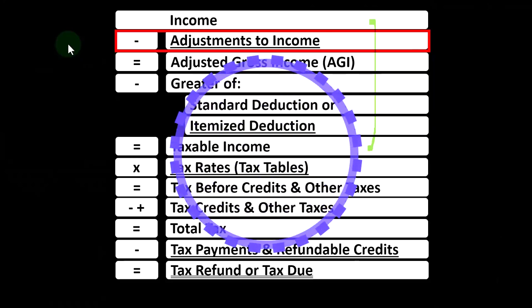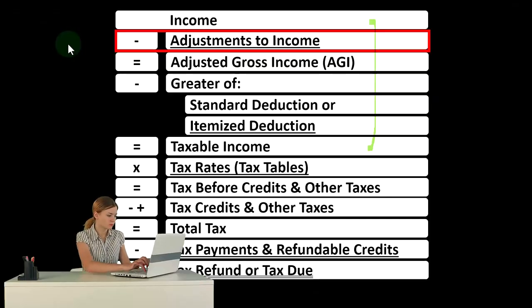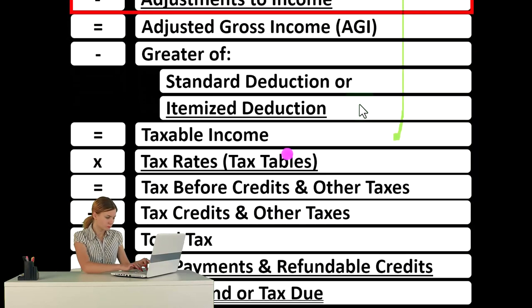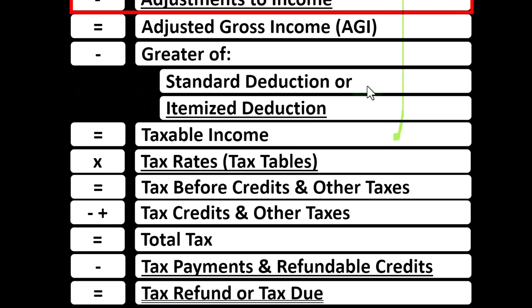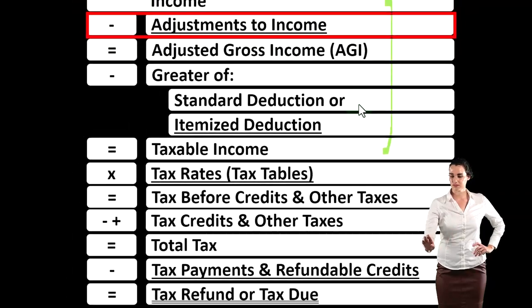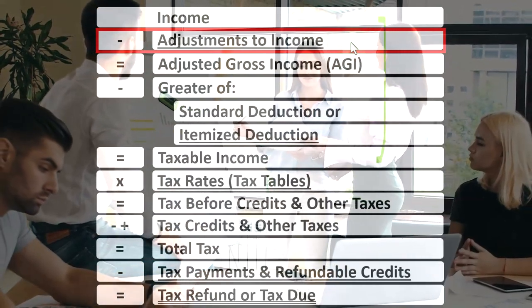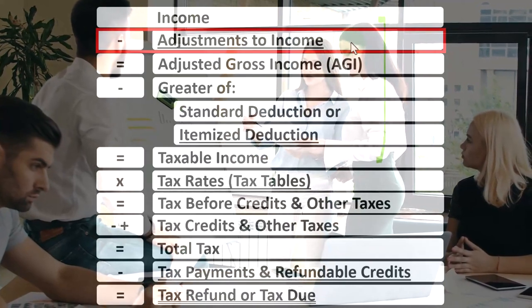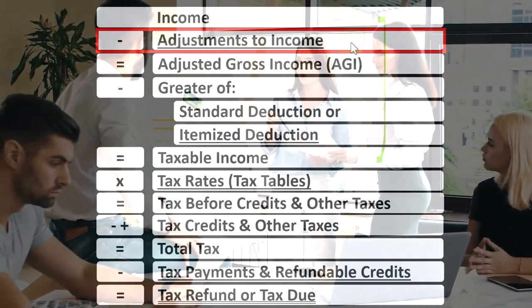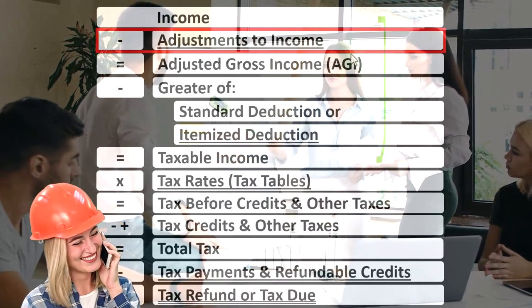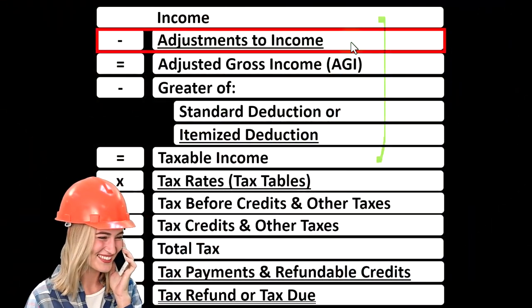Just from the deductions that most people think about: the first deductions people usually think about are itemized deductions — meaning home mortgage interest, property taxes, and charitable deductions — which you would only take if they were greater than the standard deduction, the standard deduction being dependent upon filing status principally. The adjustments to income, or above-the-line or Schedule 1 deductions, are good in the sense that if you're capable of taking those deductions, you don't have the limitation of needing to clear the standard deduction before you start getting the benefits.